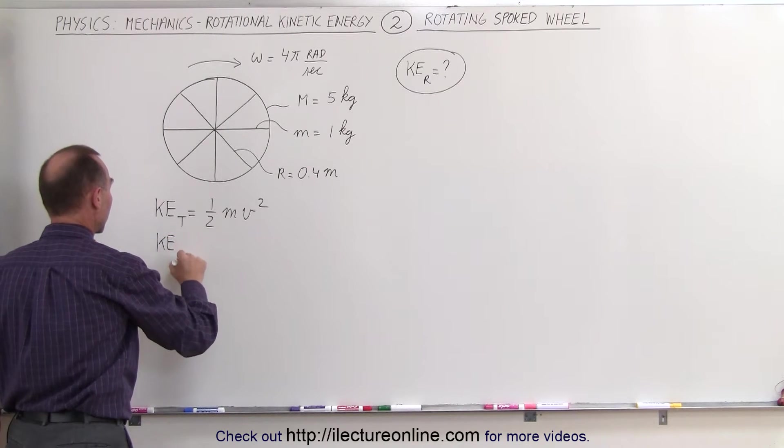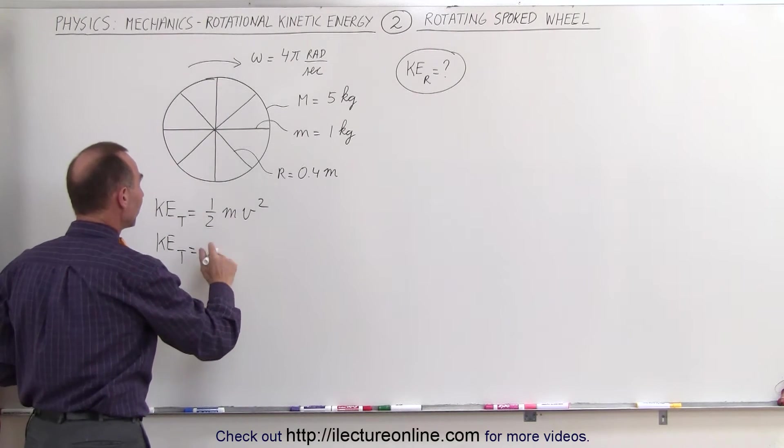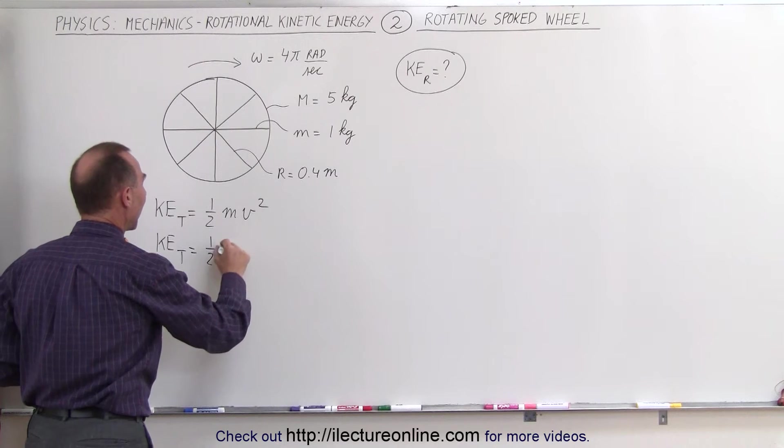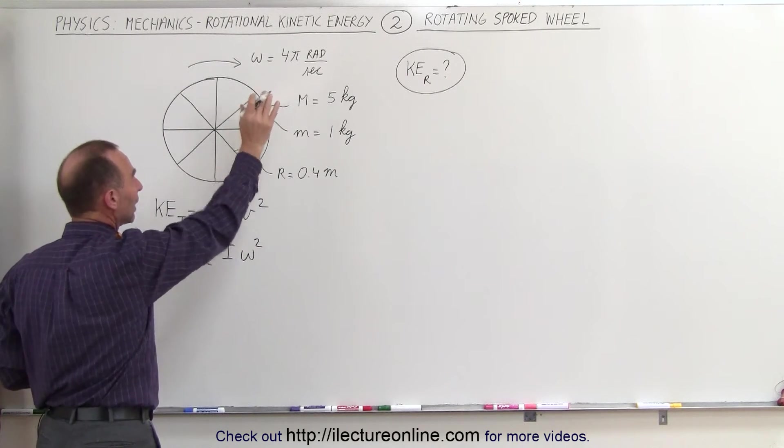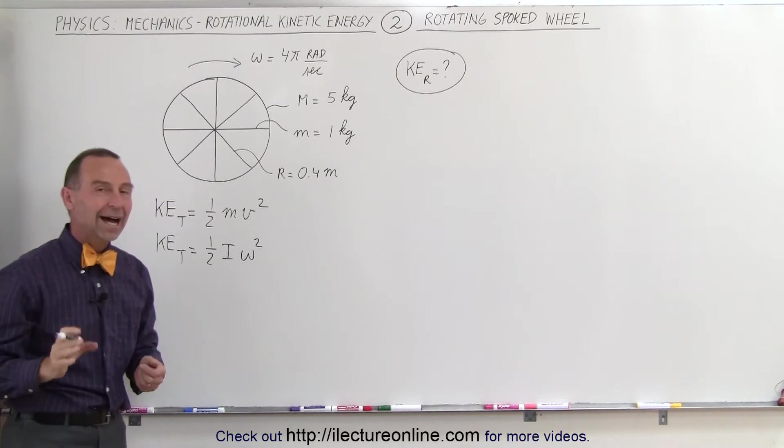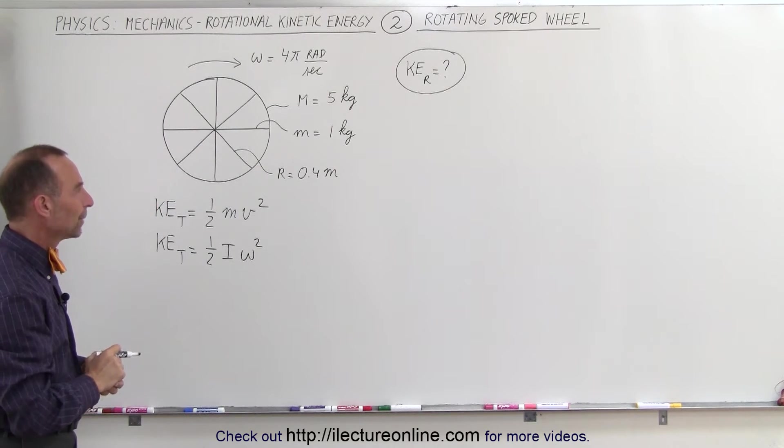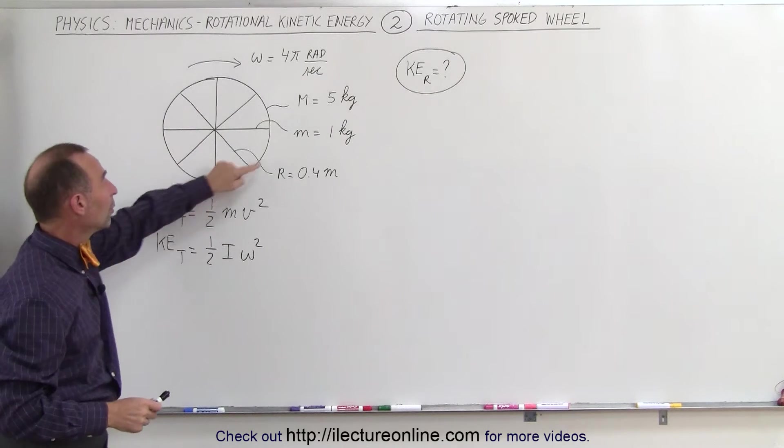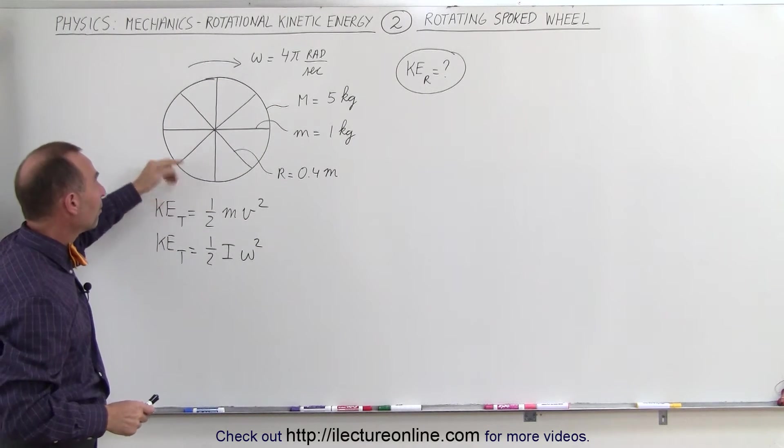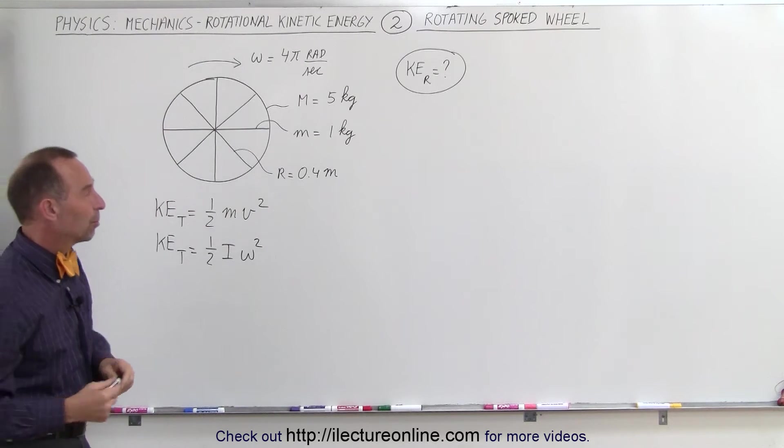For the rotational kinetic energy, we use the rotational equivalent, which is equal to 1/2 I ω². Now we do have the omega already, but we don't have the I yet, the moment of inertia. In this case, we have to find the moment of inertia of this spoked wheel. We have to find the moment of inertia of the rim plus the moment of inertia of the 8 spokes.